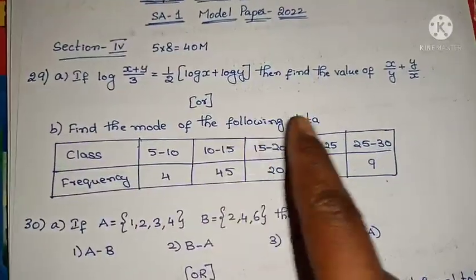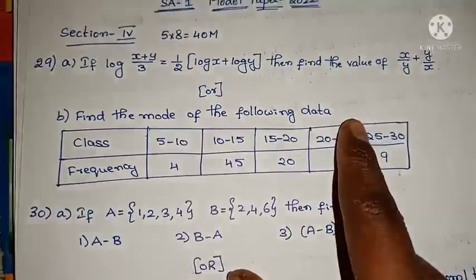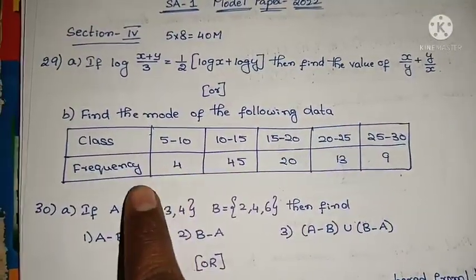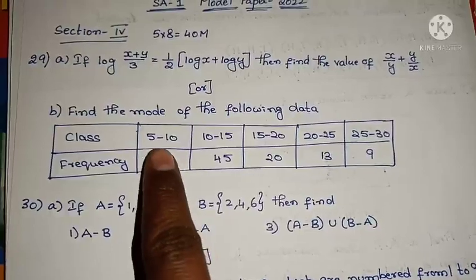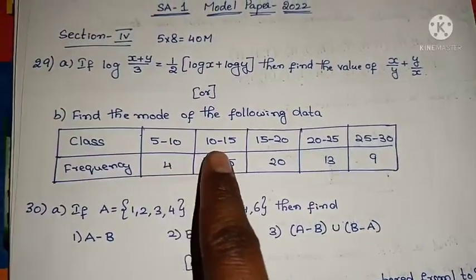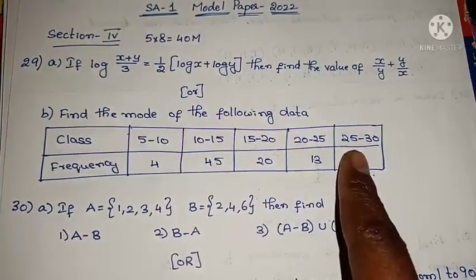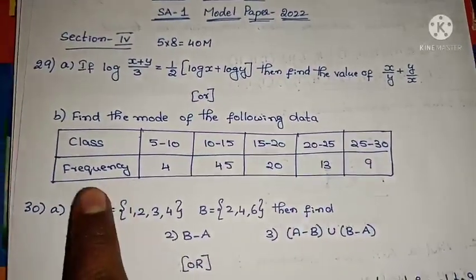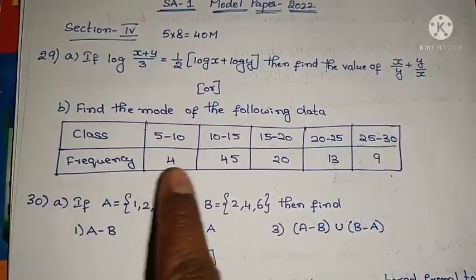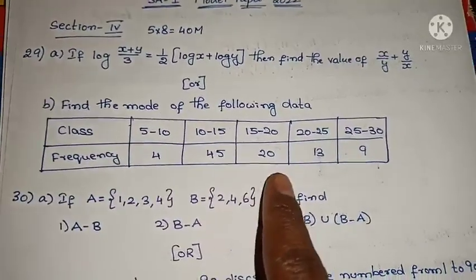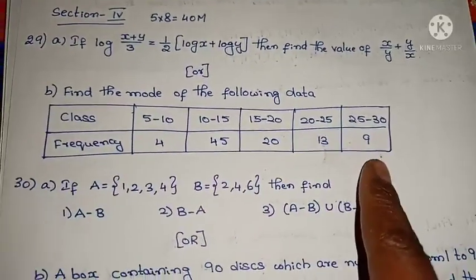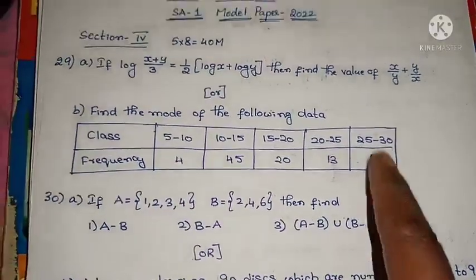Find the mode of the following data. Classes and frequency: 5 to 10, 10 to 15, 15 to 20, 20 to 25, 25 to 30. Frequencies are: 4, 45, 20, 13, 19.